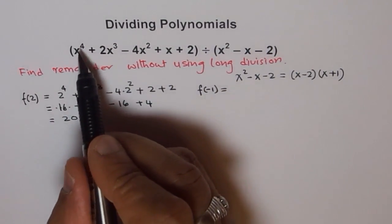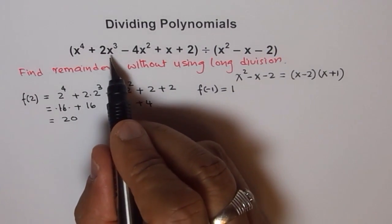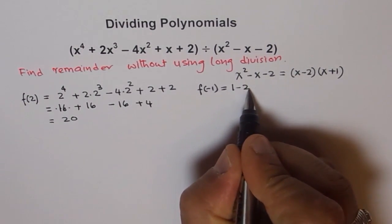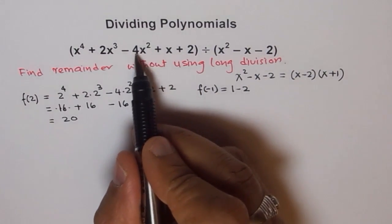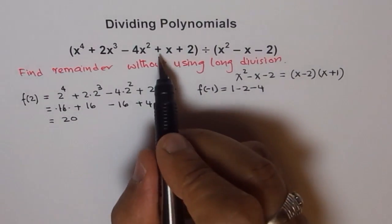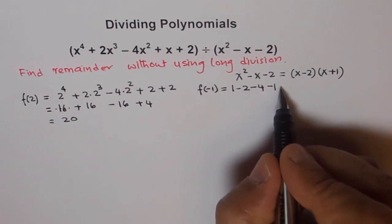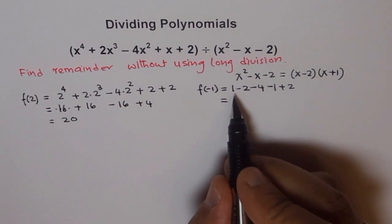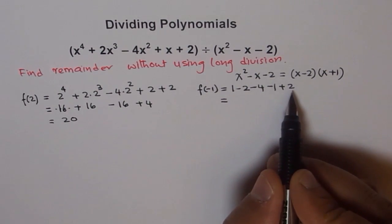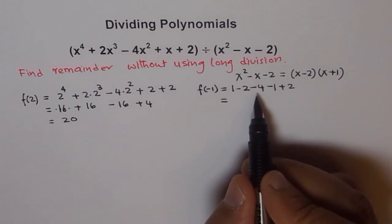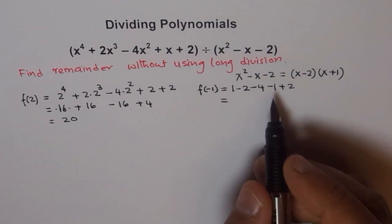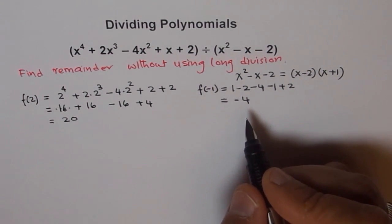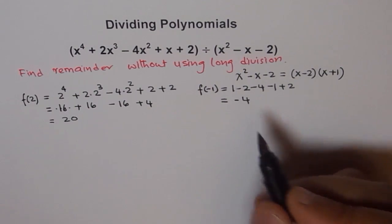So we say f(-1) equals, now here, if I put -1⁴ I get 1. -1³ is -1, times 2 is -2, so I get -2. -1² is positive, so -4. -1, plus 2, plus 2. That will give me a value of, now let's add the plus things, which is 1 and 2, which is 3, and the minus things are 7. So -7 plus 3 gives us the value of -4.